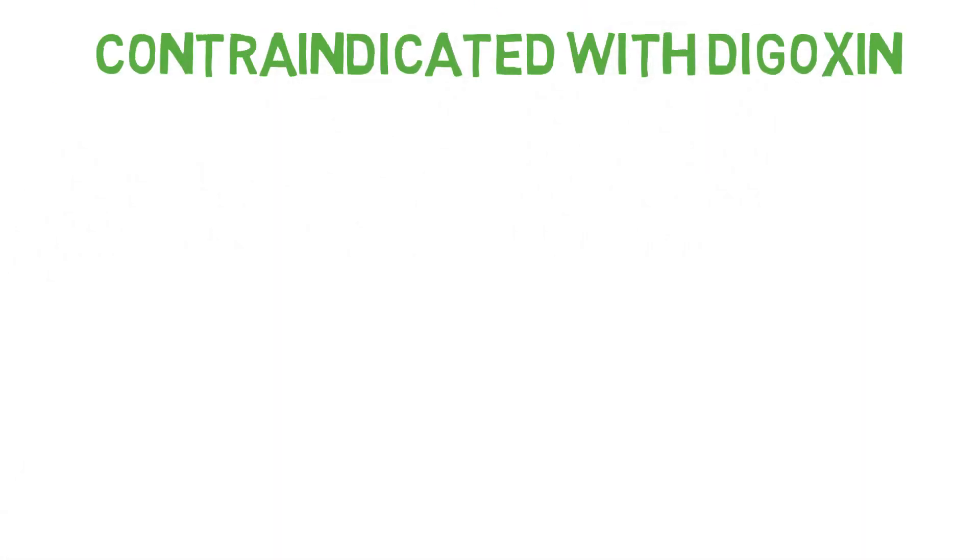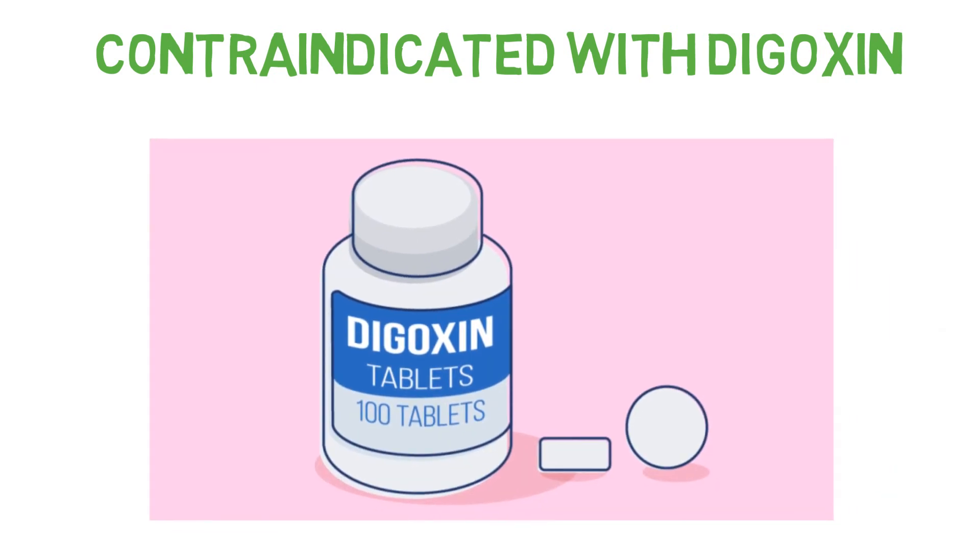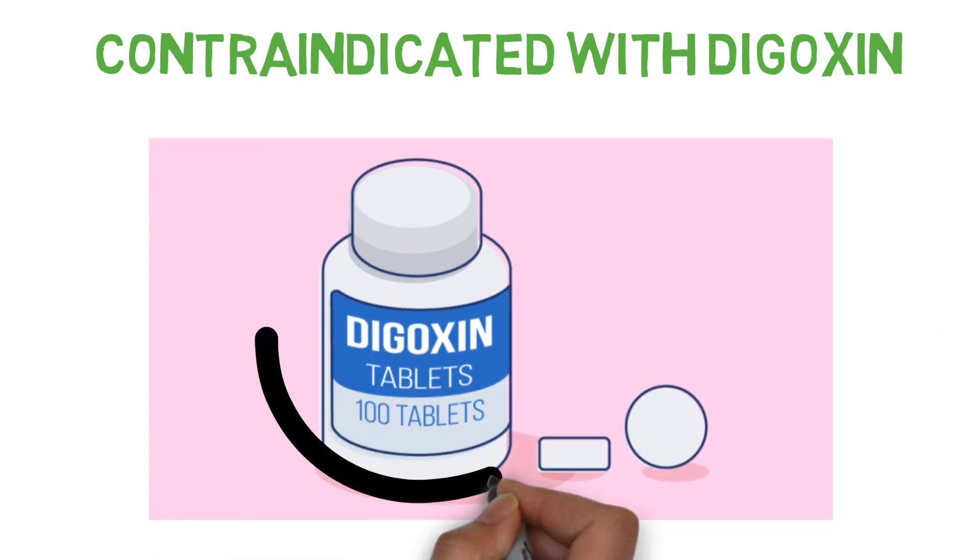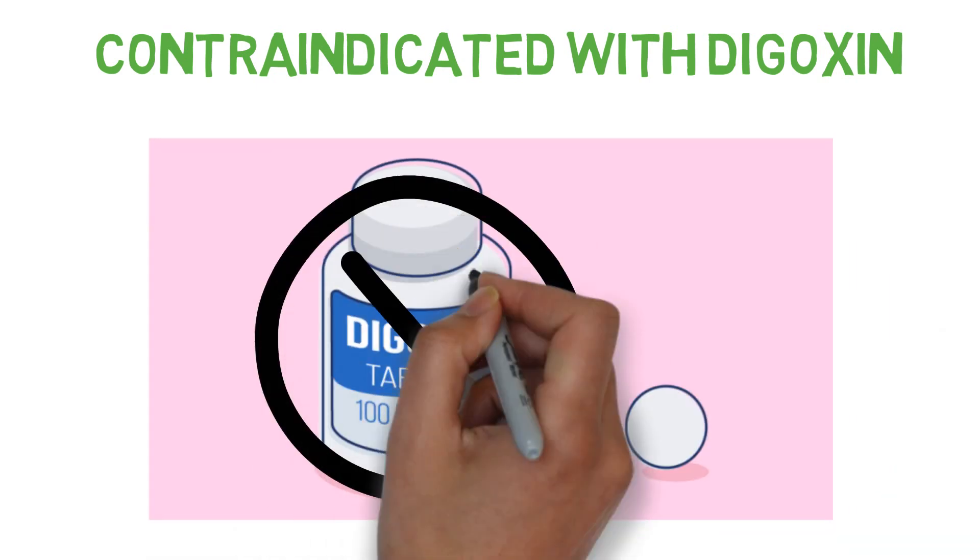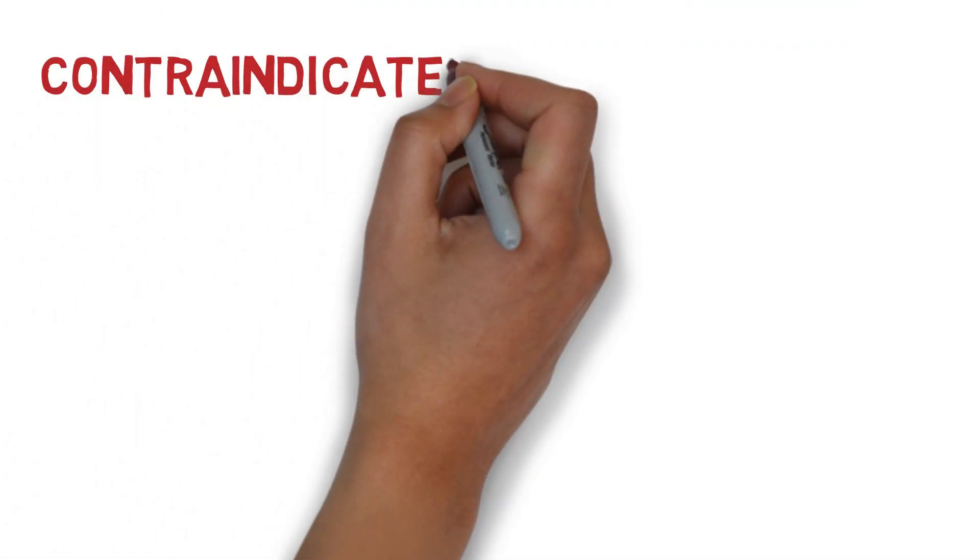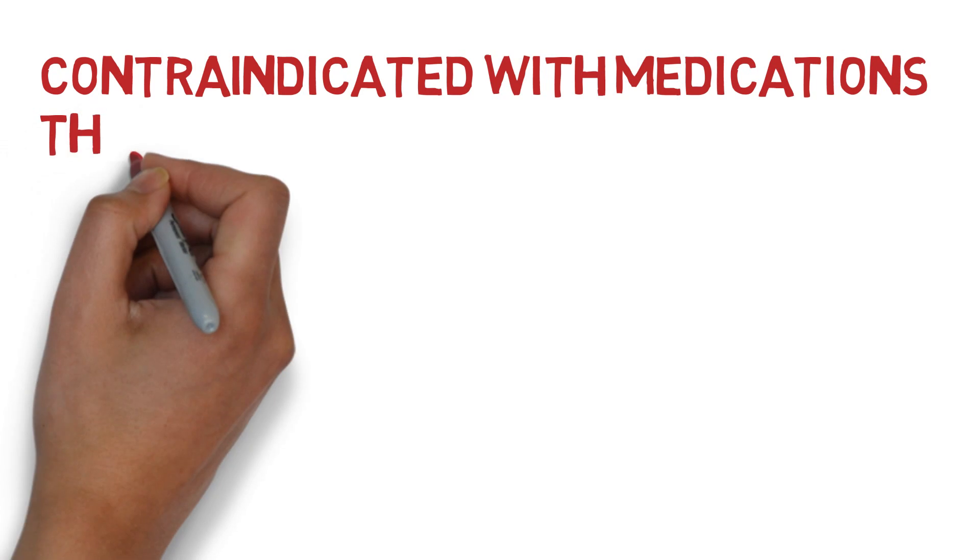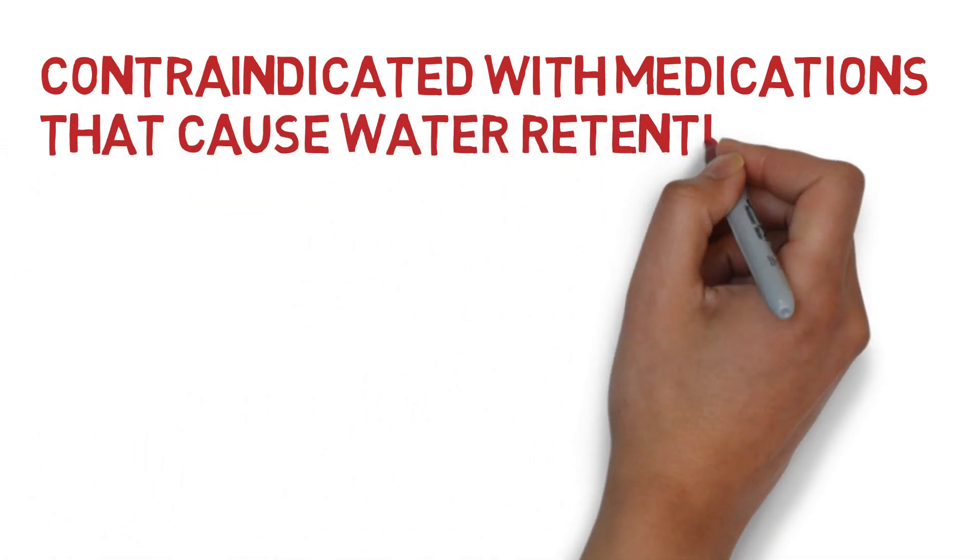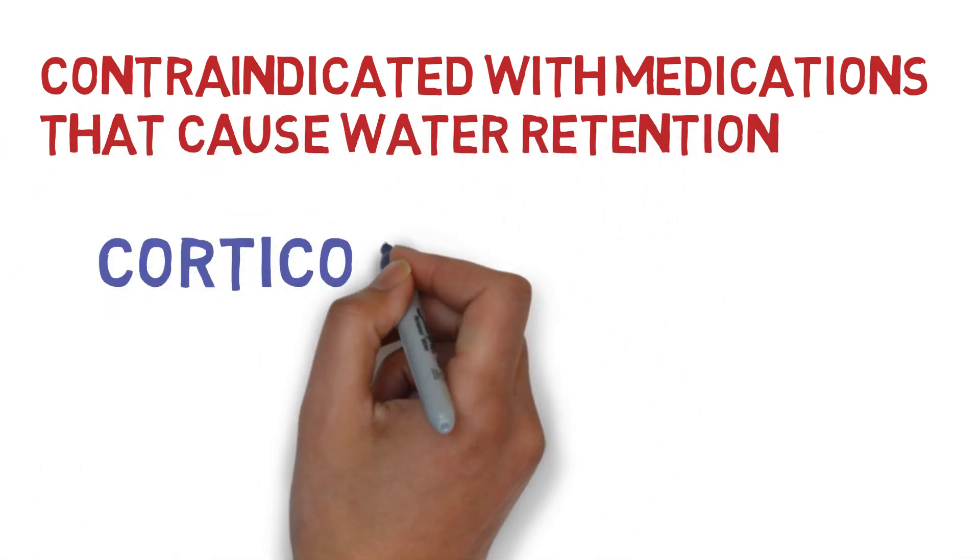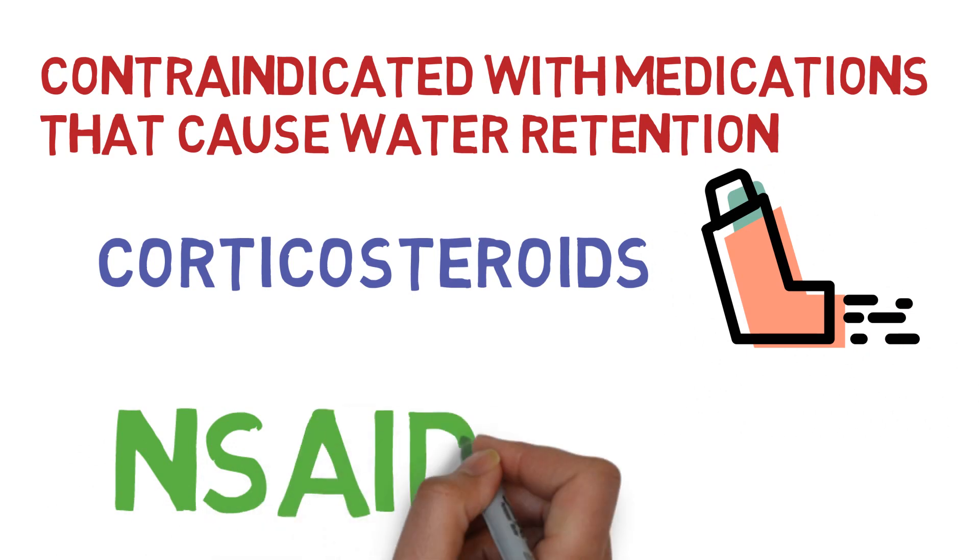Thiazides are contraindicated with digoxin. As a result of hypokalemia, this interaction can result in cardiac arrhythmia. Furthermore, thiazides are contraindicated with drugs that cause fluid retention such as corticosteroids and NSAIDs.